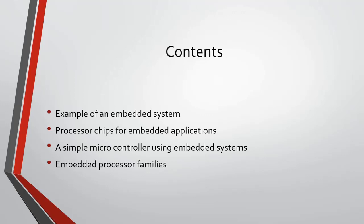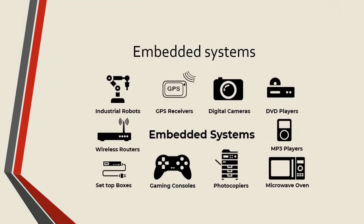In this chapter you will learn some examples of embedded systems, processor chips for embedded applications, a simple microcontroller using embedded systems, and also embedded processor families. An embedded system is a computer system or combination of a computer processor, computer memory, and input/output peripheral devices dedicated to perform a specific task — mechanical or electronic in nature. Examples include industrial machines, consumer electronics, agricultural devices, automobiles, medical equipment, cameras, digital watches, household appliances, aeroplanes, vending machines, toys, and mobile devices.